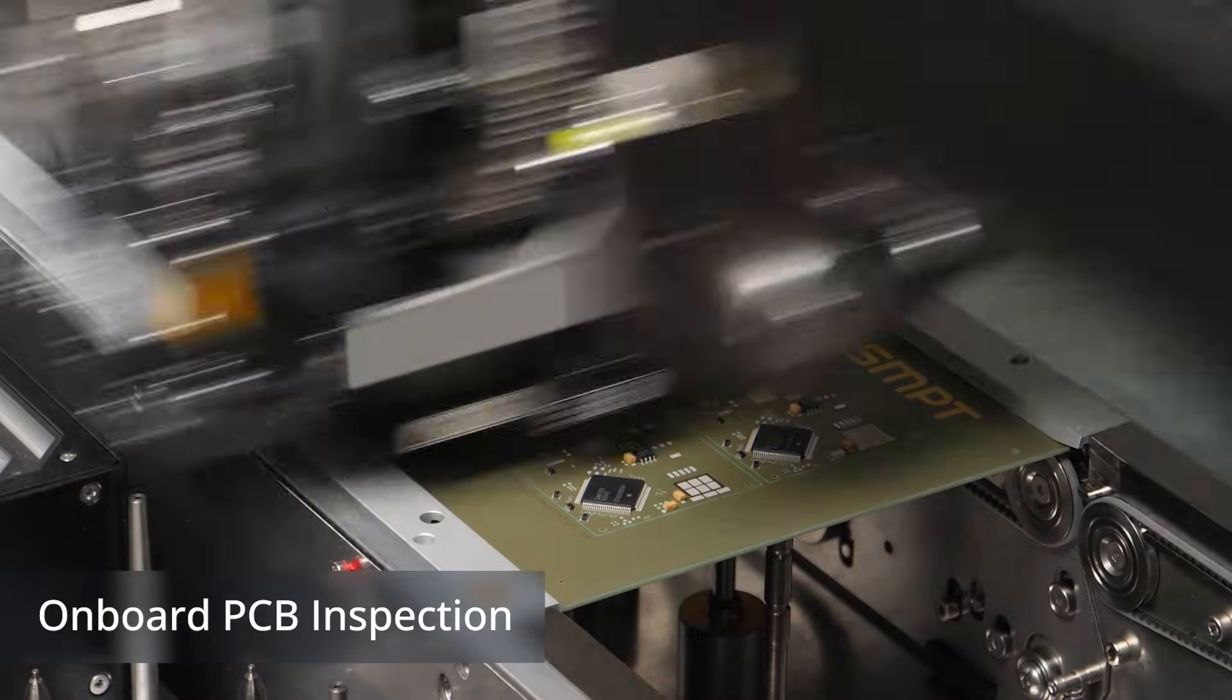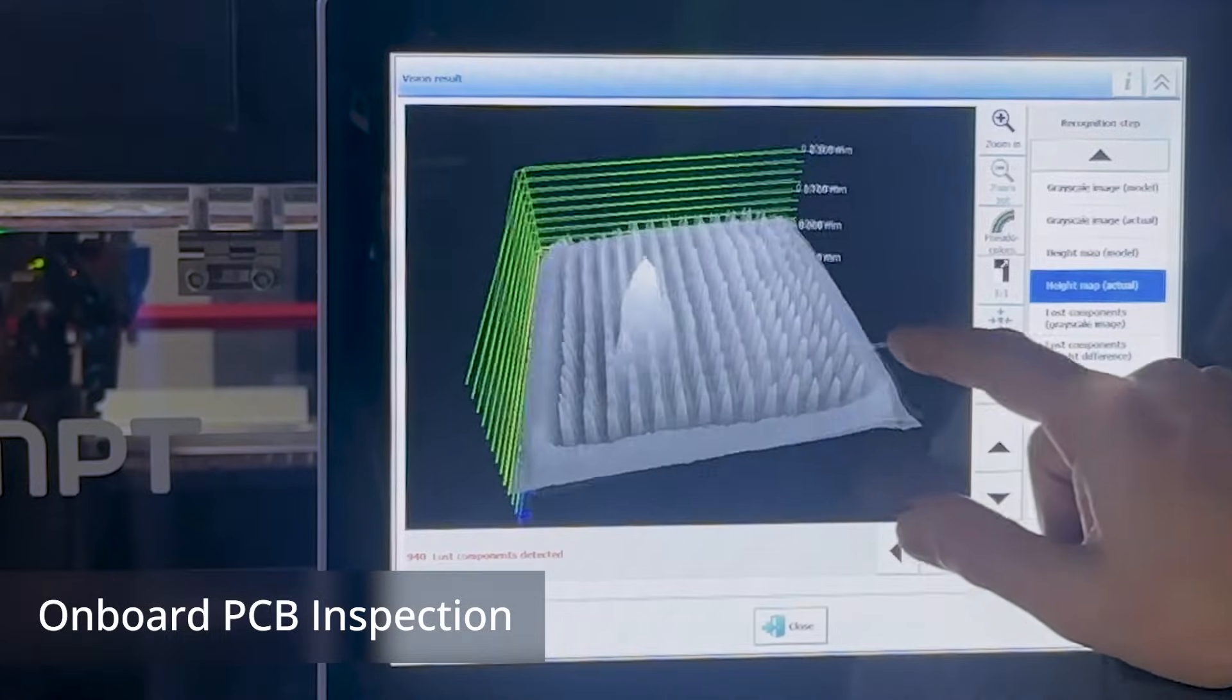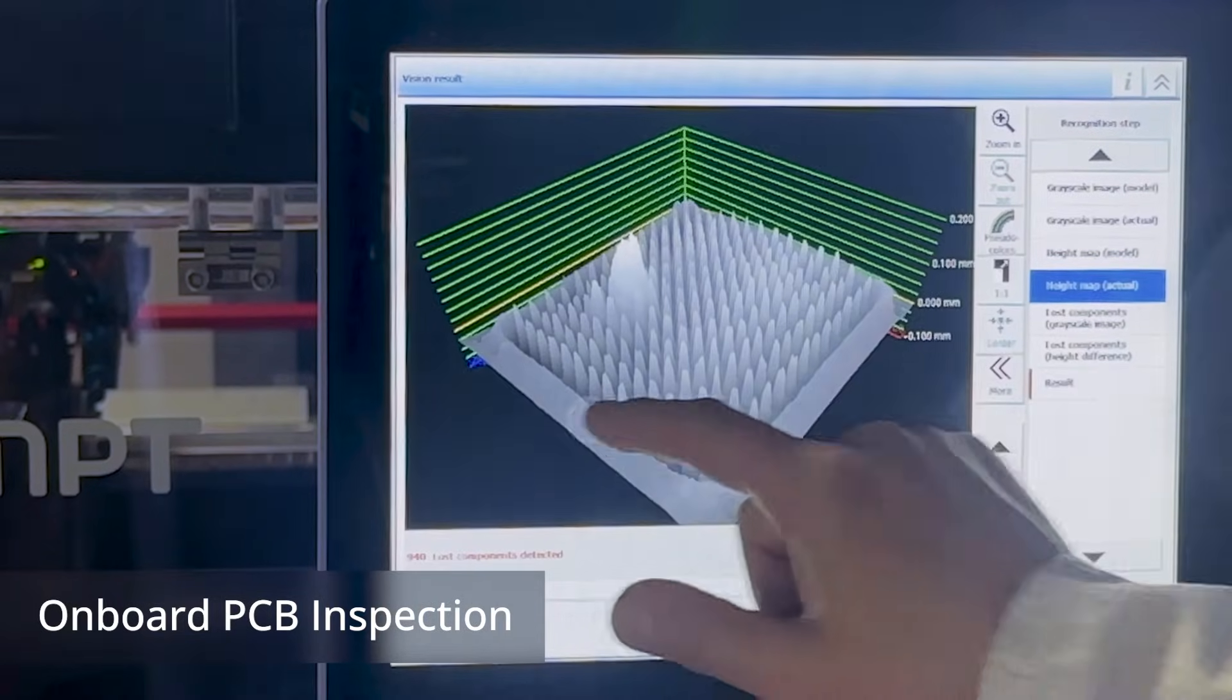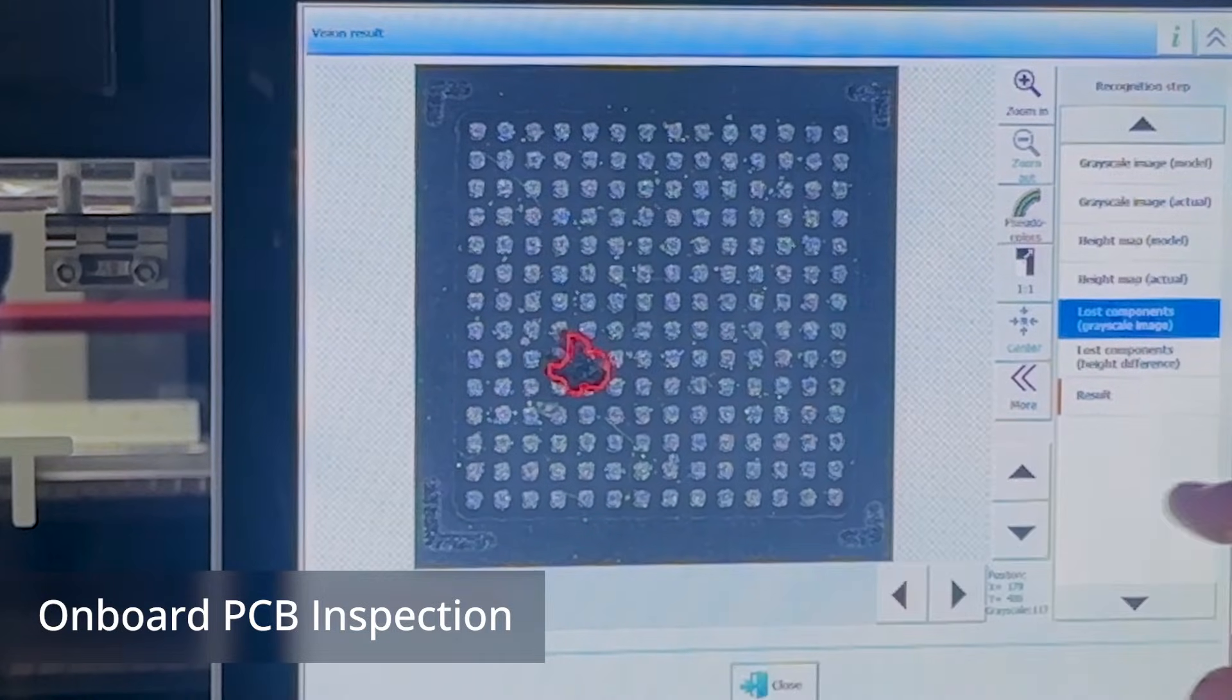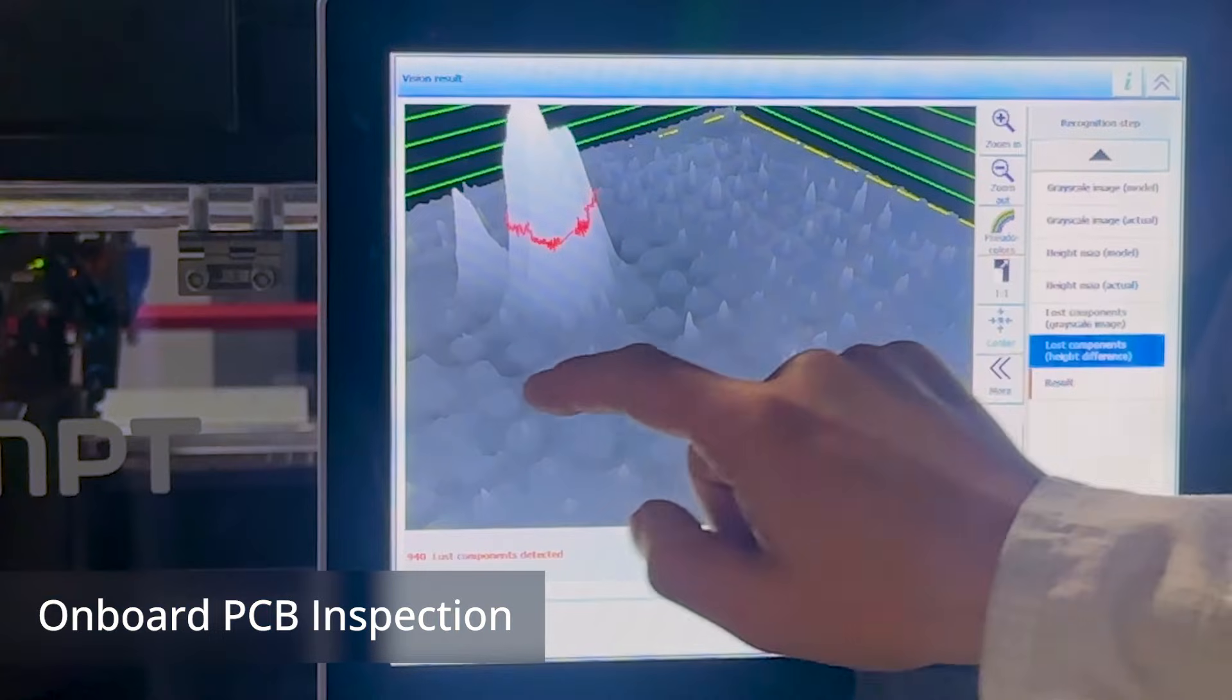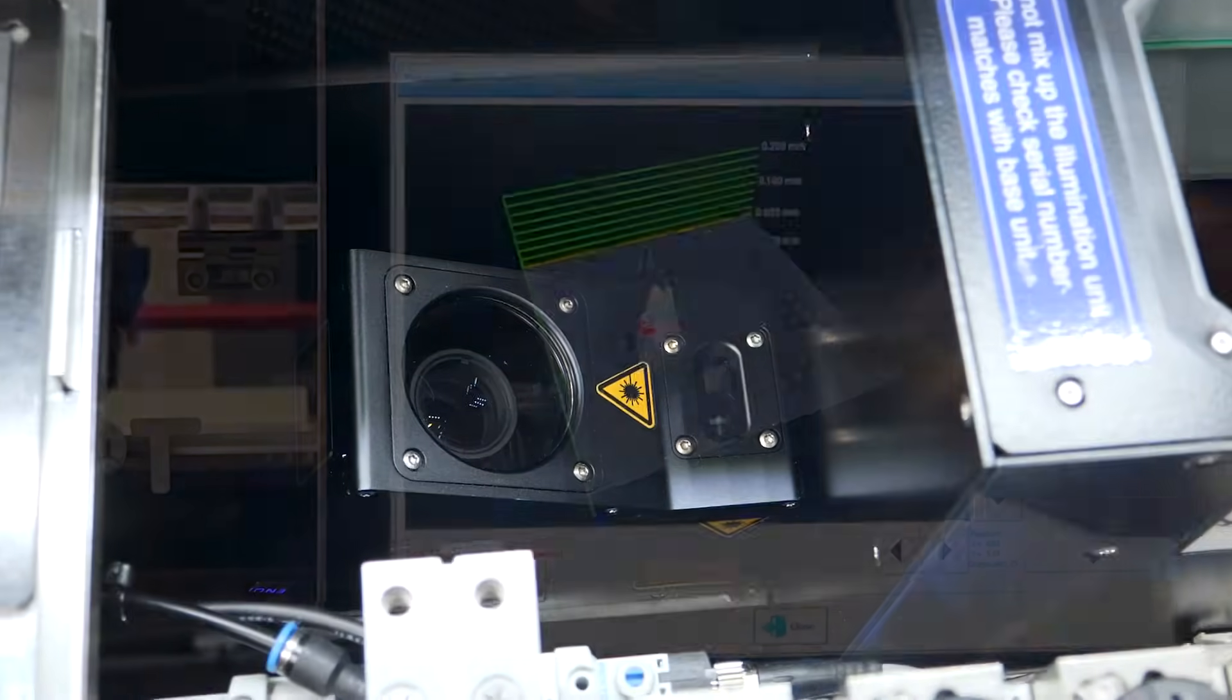The C Place SX offers on-board PCB inspection, allowing for real-time verification of solder paste, foreign material, missing components, and correct positioning. Results are instantly available in the station software at the line, ensuring optimal assembly quality.